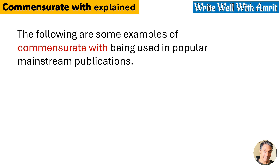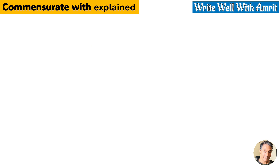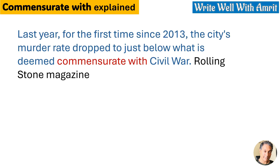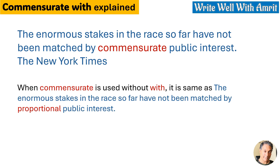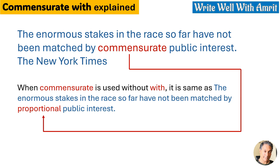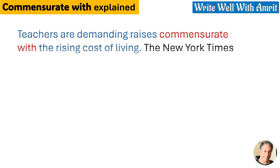The following are some examples of 'commensurate with' being used in mainstream publications. From Rolling Stone: 'Last year, for the first time since 2013, the city's murder rate dropped to just below what is deemed commensurate with civil war.' From The New York Times: 'The enormous stakes in the race so far have not been matched with commensurate public interest' — which is the same as saying 'matched by proportional public interest.' Also from The New York Times: 'Teachers are demanding raises commensurate with the rising costs of living.'